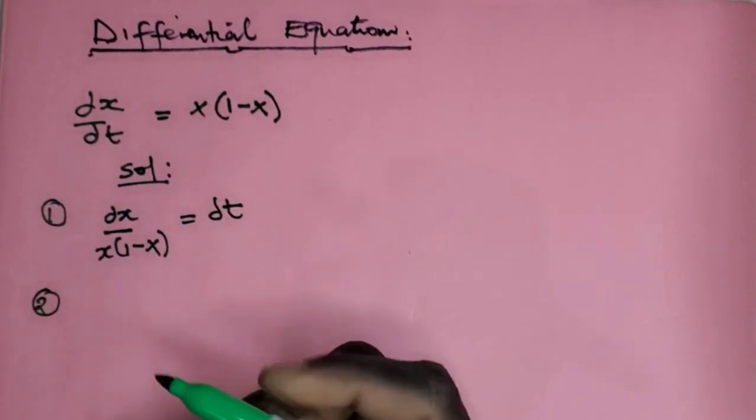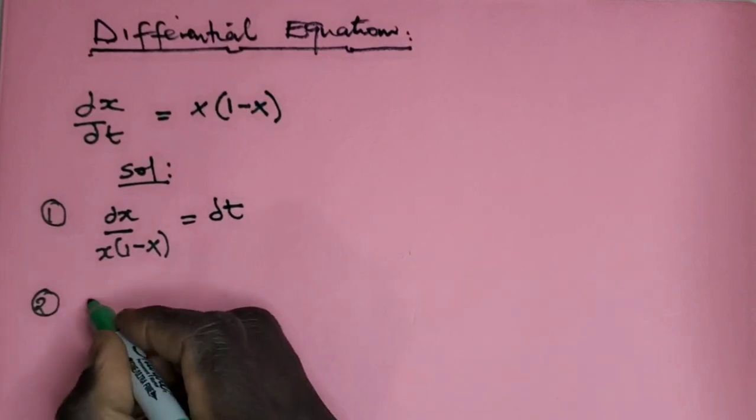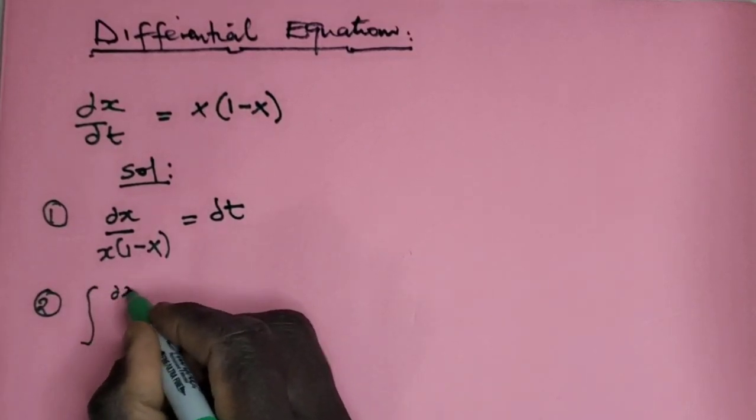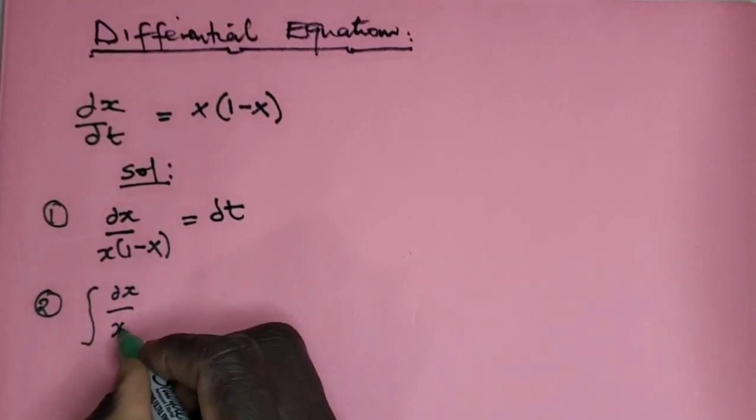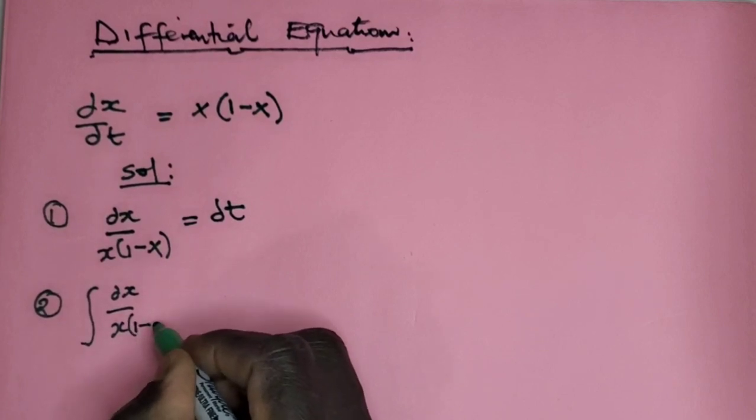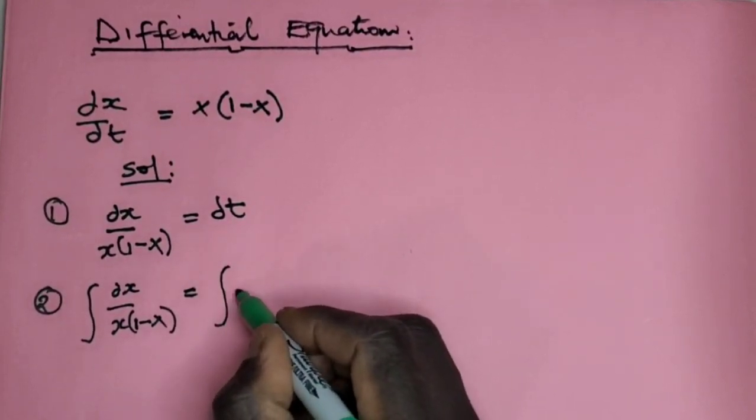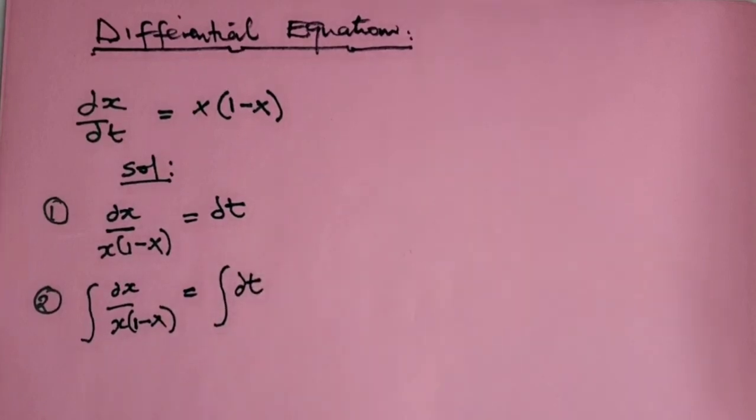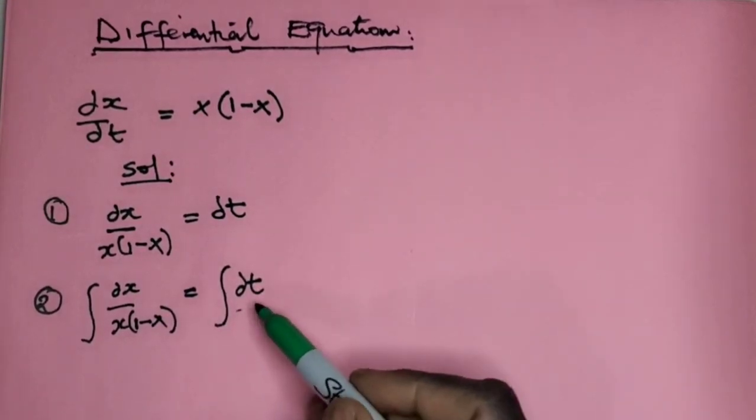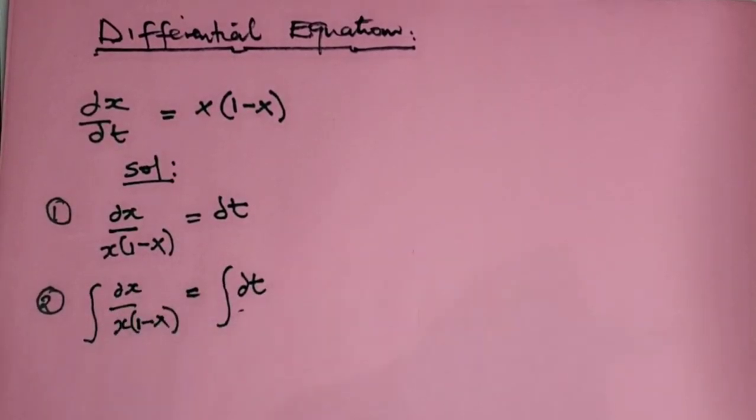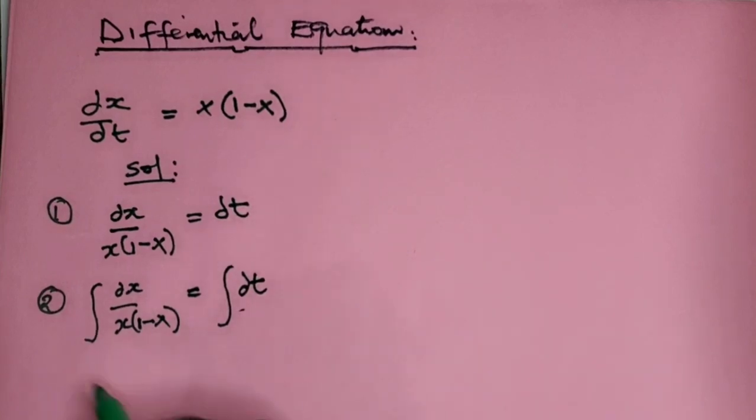Number two, now you integrate both sides. So integrate both sides, that is integral of dx over x(1-x) = integral of dt. Now this one is just t, but this one is a little bit harder. So we need to break it down.